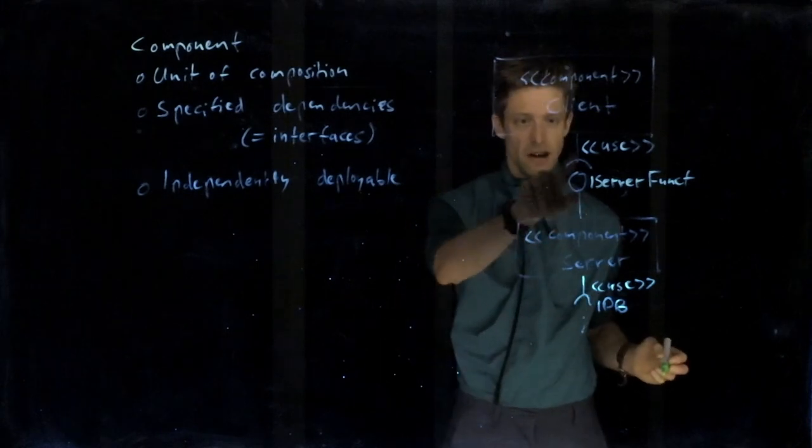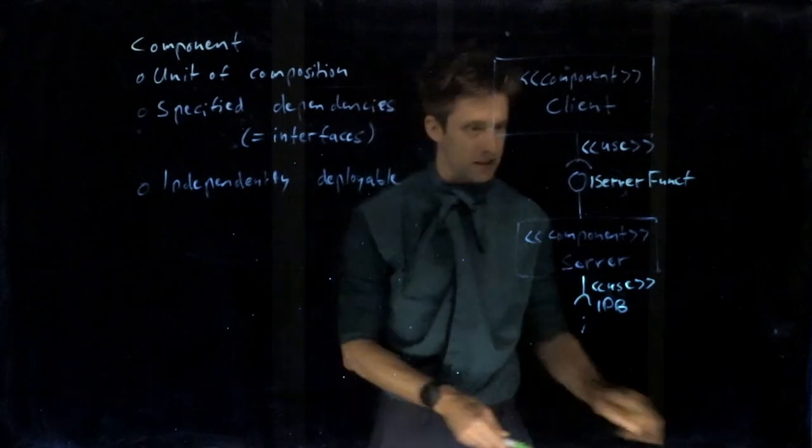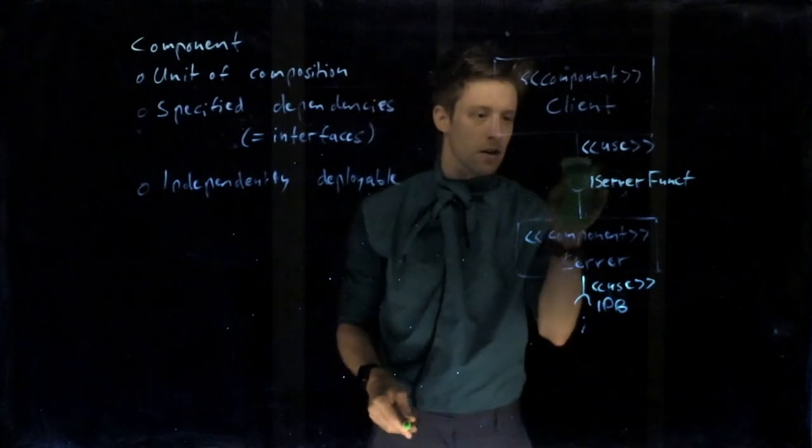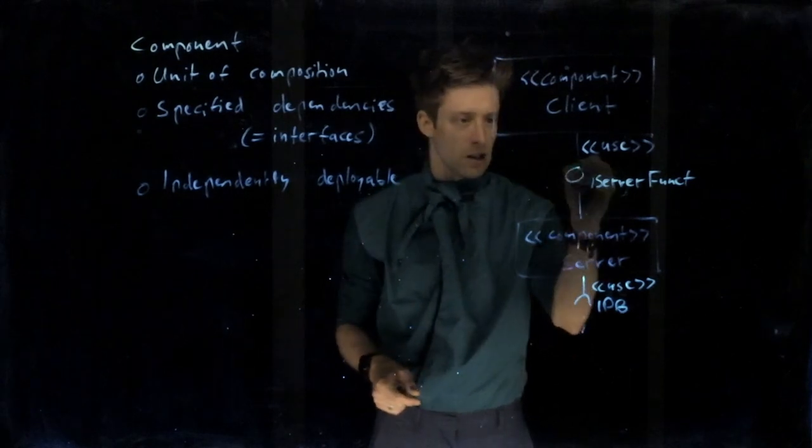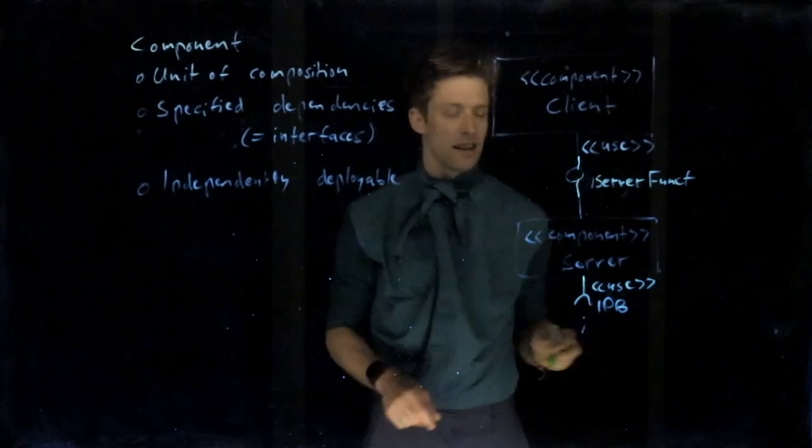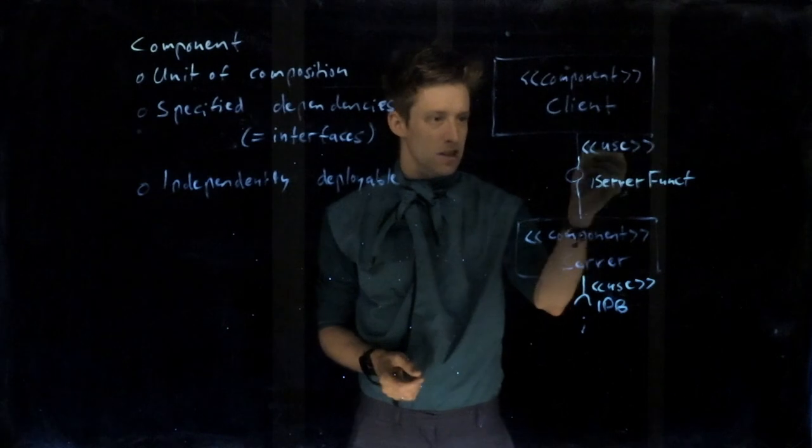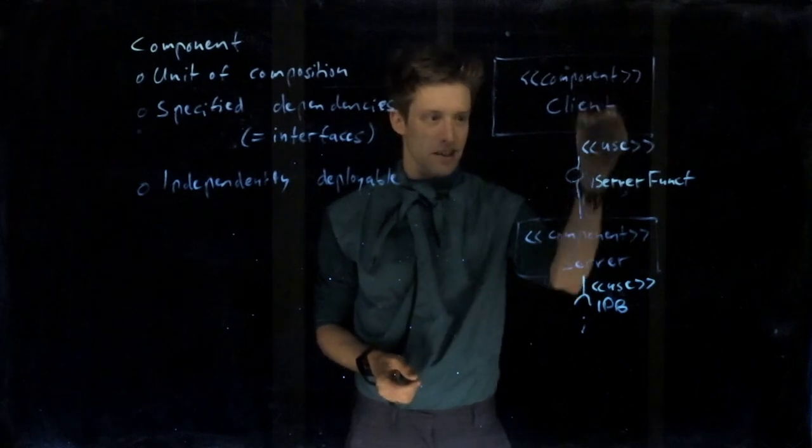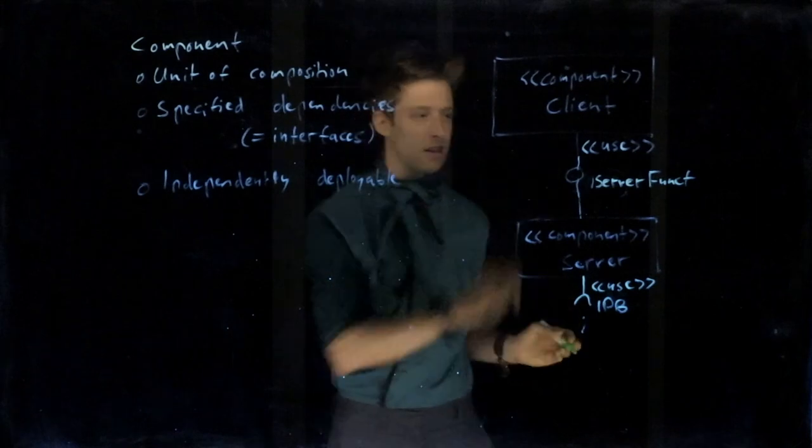So what you see very often here, I've been drawing the lollipops separated. But what you very often see is that people connect them. So they say, well, if this is how our system looks like, we just draw it like this. So they are connected. That's how our system is deployed. And by writing use here, we know that the client is the one that is using, that is requiring it and the server is providing it. So that's something you see very often.